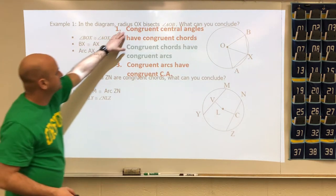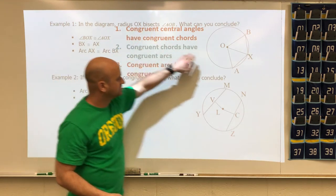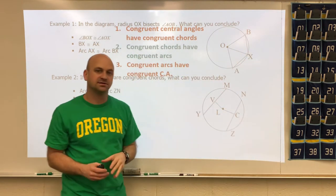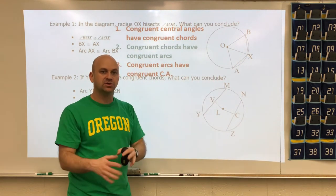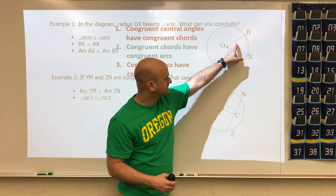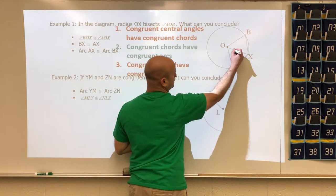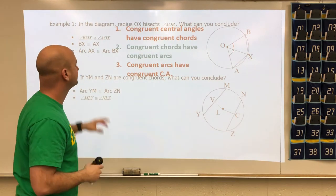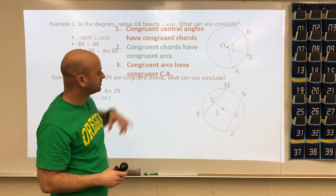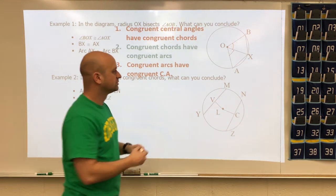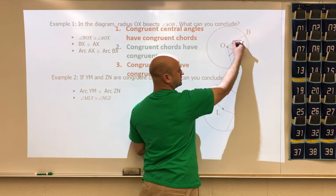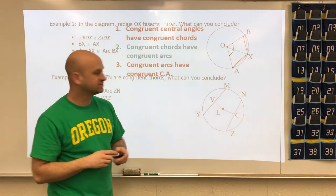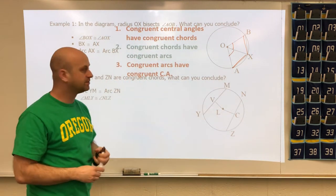In example one, radius OX bisects angle AOB, meaning it cuts the central angle in half, making two equal portions. The first conclusion: congruent central angles have congruent chords. So if this angle is congruent to that angle, then this chord is congruent to that chord.